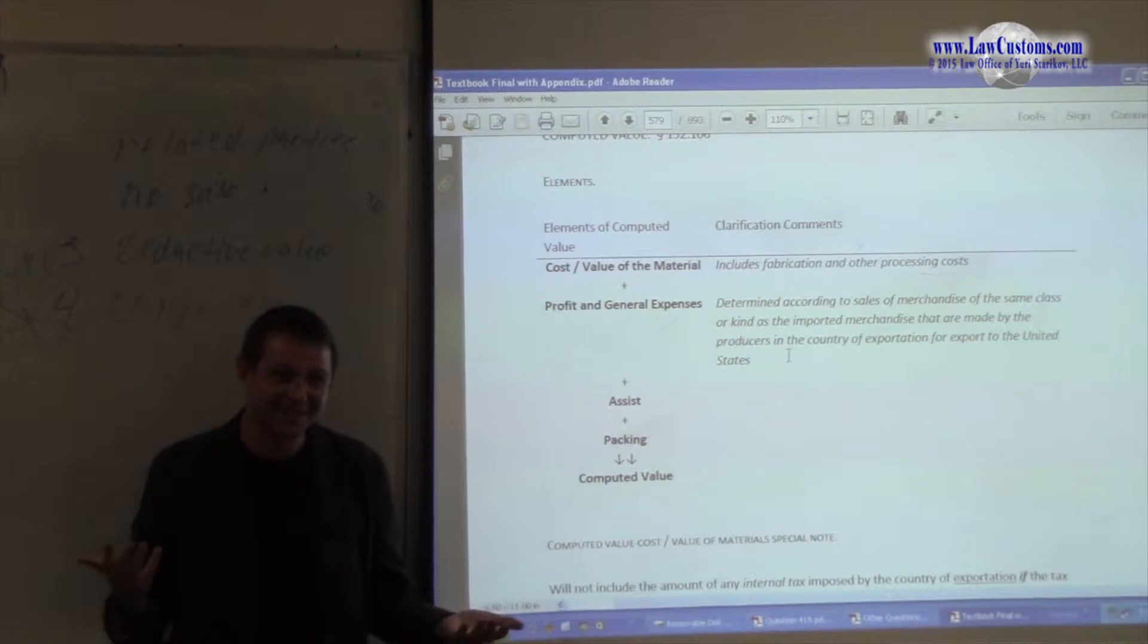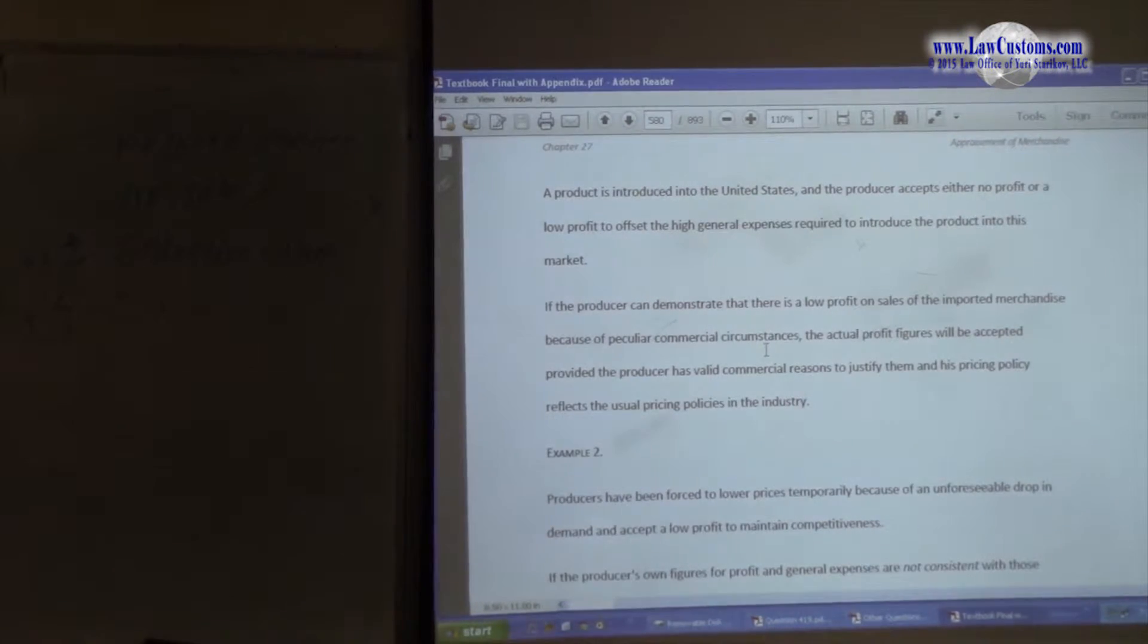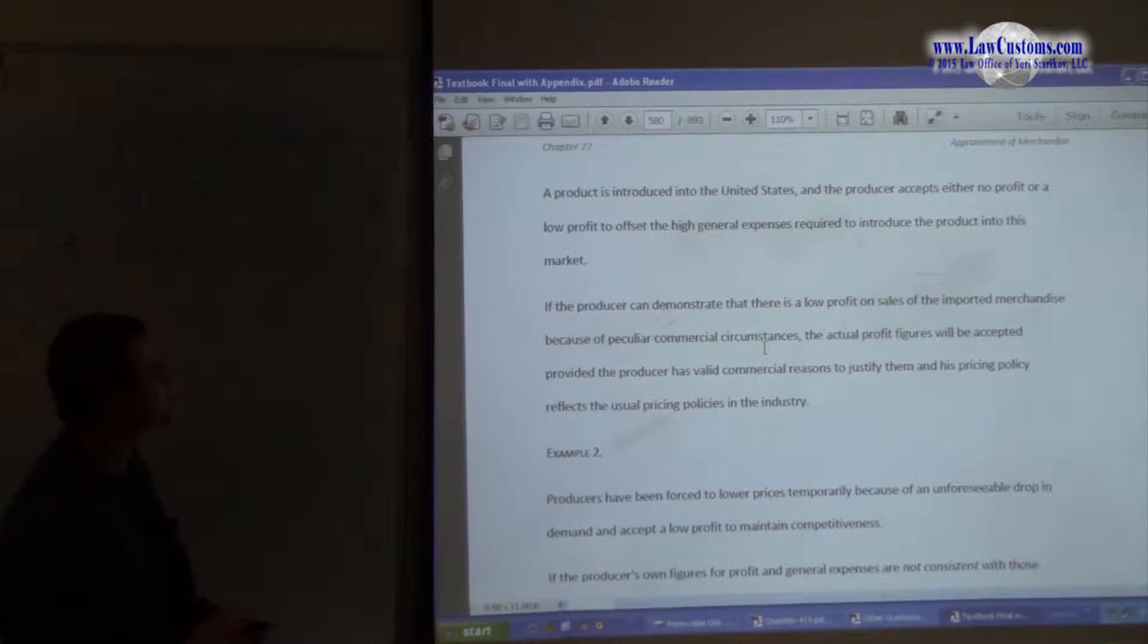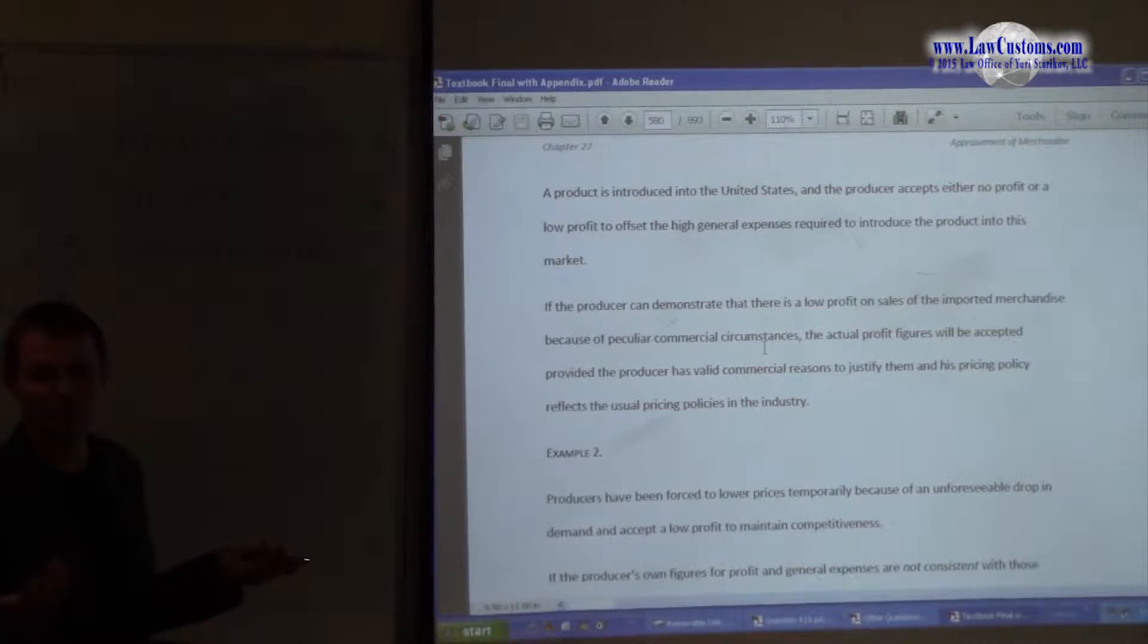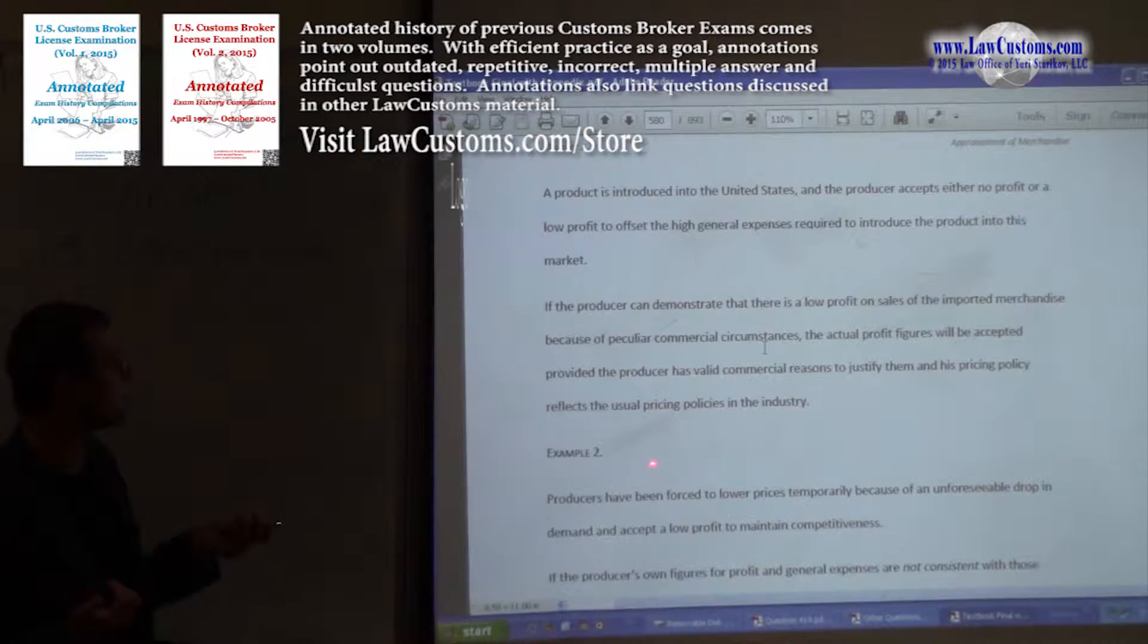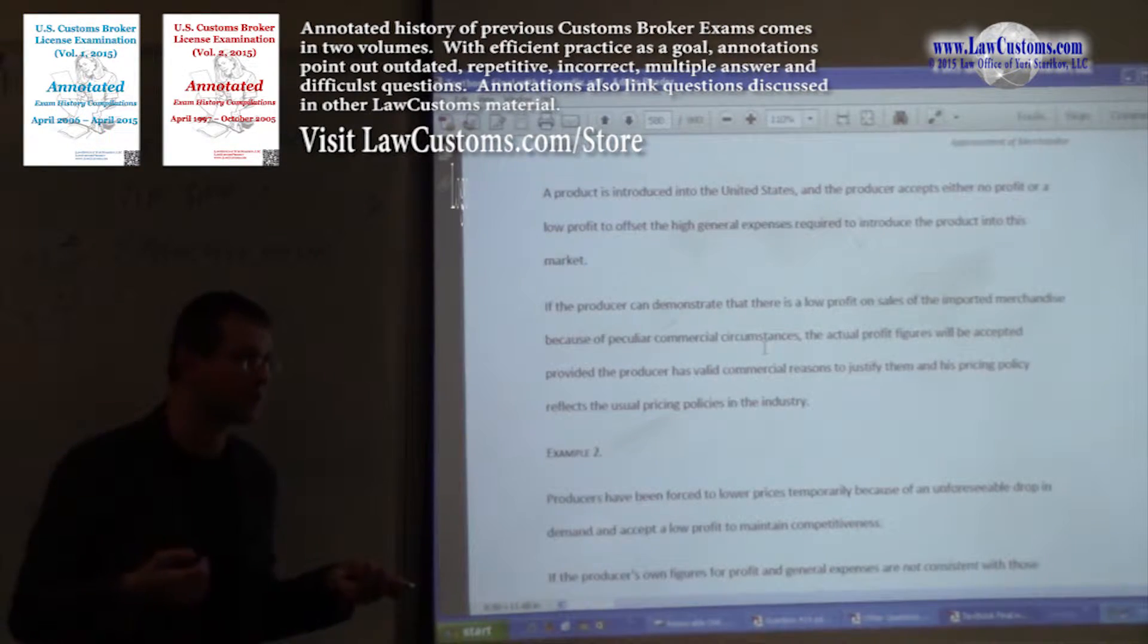So what do you do? So Samsung Electronics, they say to customers, well we brought in these TVs but we make no profit. We actually sell them at a loss. We just want to get foothold in the market because those RCA people, they just have those TVs everywhere. So notice, not only they can save on a customs user, but they can also, they have customs helping them to drive out the competition out of the market. Is that problematic? Yes. So let's talk about that. So one example says, a product is introduced into the states, producer accepts either no profit or low profit to offset high general expenses required to introduce it into the market. Normal.